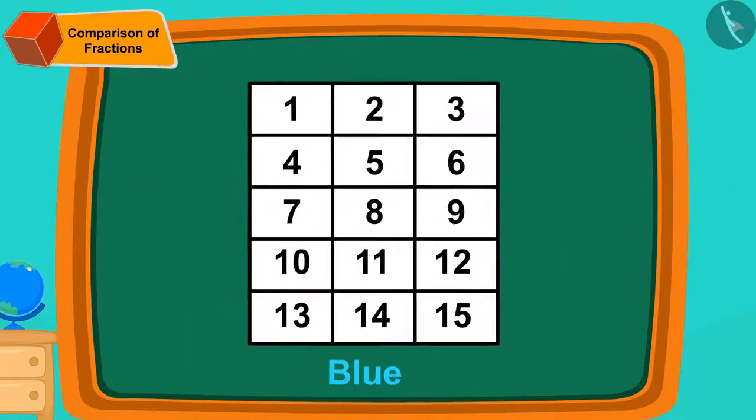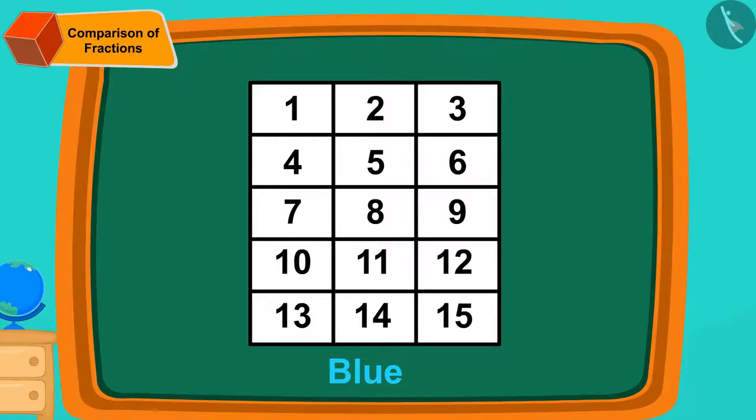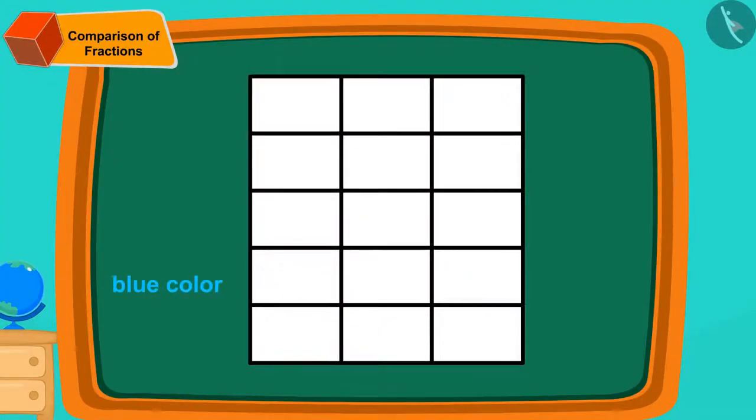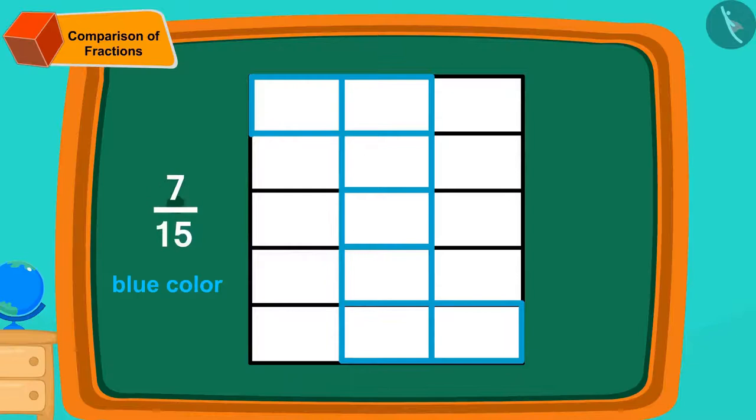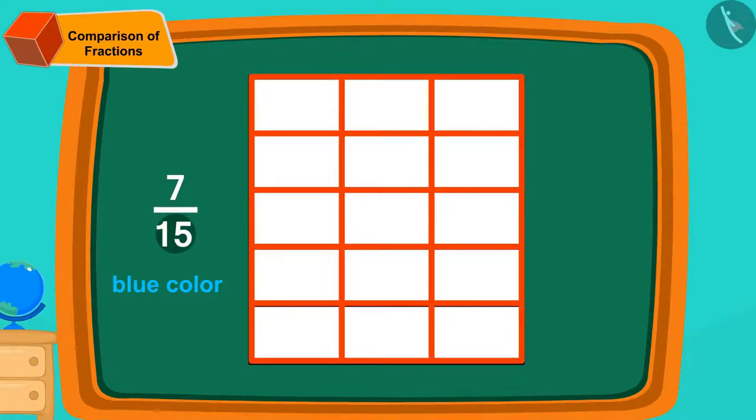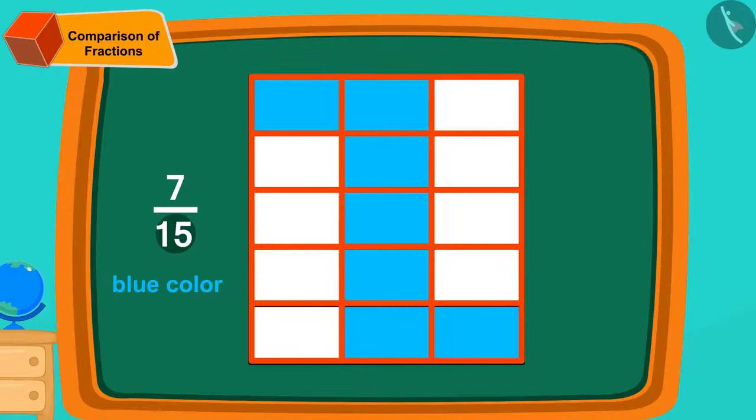Let us first fill the blue color of Chanda's design. Chanda needs blue color in 7/15 sections. In other words, 7 out of 15 sections have blue color. We can fill it in this way.